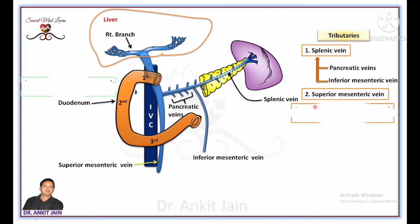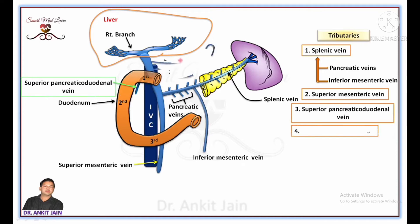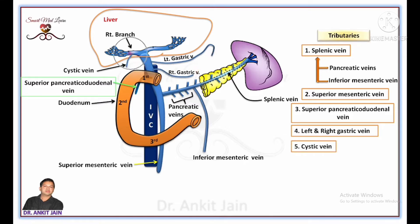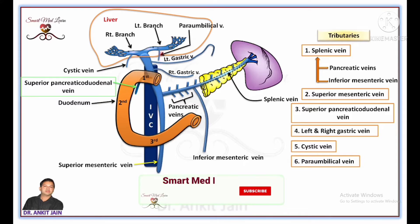The third tributary is the superior pancreaticoduodenal vein, which joins the portal vein behind the first part of the duodenum. Right and left gastric veins join the supraduodenal part of the portal vein, and these gastric veins receive blood from the lesser curvature of the stomach. Cystic vein joins the right branch of the portal vein before it enters the right lobe of the liver. The last tributary is the paraumbilical vein, which connects the left branch of the portal vein to the superficial veins of the anterior abdominal wall around the umbilicus.